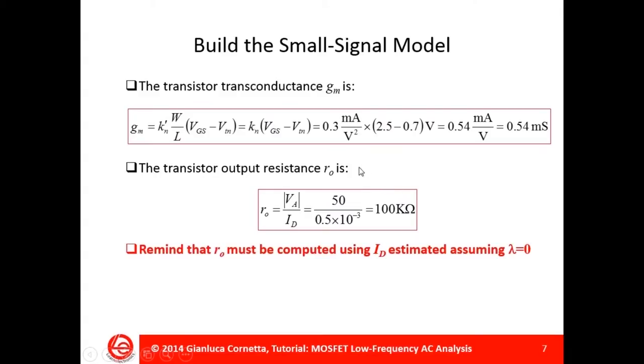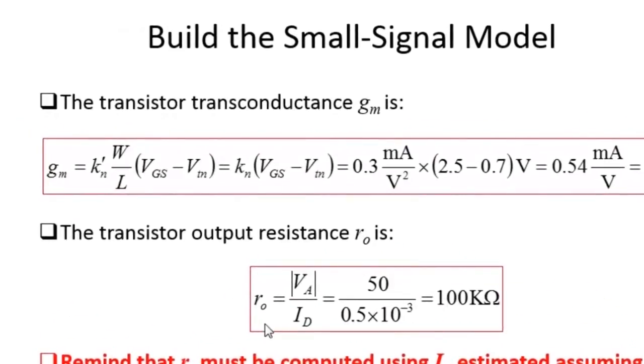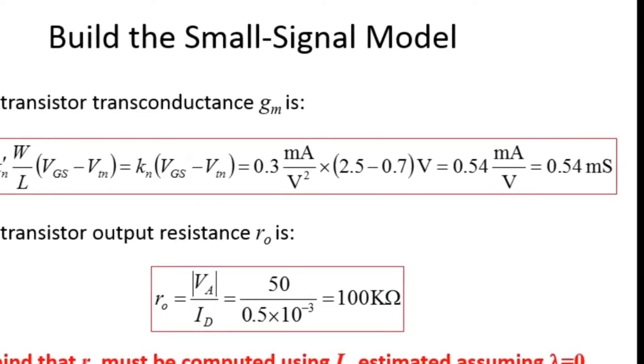Now that I have computed all the DC parameters, I can compute the small signal parameters. That is, transistor transconductance gm and transistor channel resistance ro. By replacing the DC values in the equation of the transconductance gm, I obtain a gm equal to 0.54 milliamps.